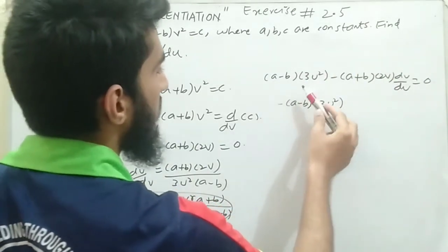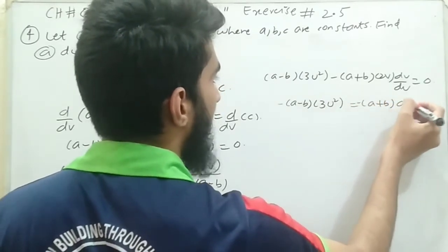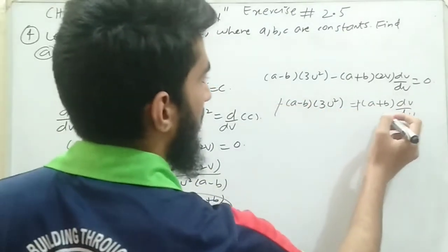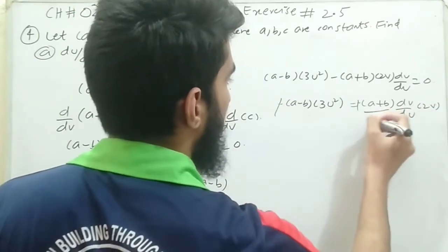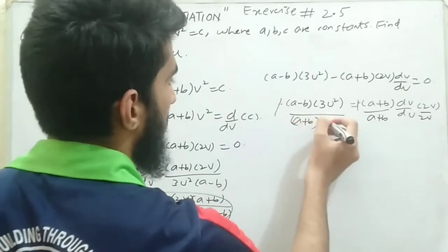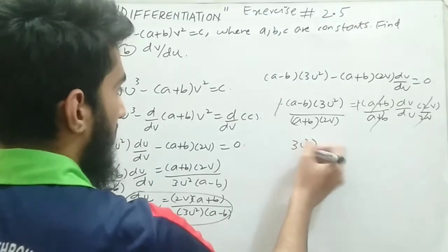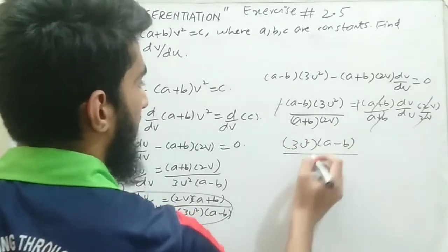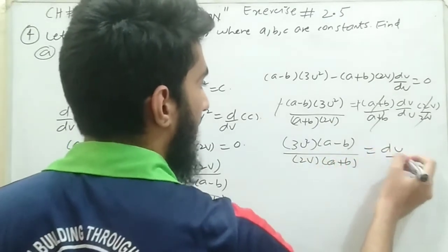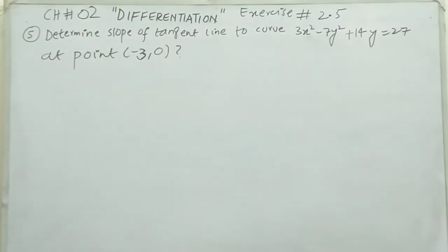Shifting (a minus b) times 3u² to the right-hand side, it becomes minus (a minus b) times 3u². We are left with (a plus b) times 2v times dv/du. Dividing both sides by (a plus b) times 2v, we get dv/du equals 3u²(a minus b) divided by 2v(a plus b). This is the required result for dv/du — the answer for question number four.